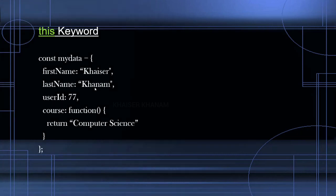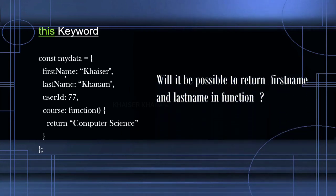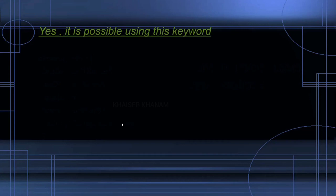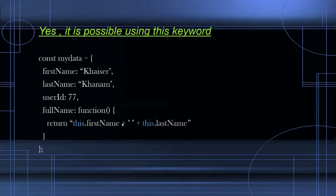Before that let's understand what is the 'this' keyword. Here I have my previous example. What if I just want to access first name and last name inside this function? First name and last name are inside this object, but I want to access those properties inside this function. Yes, this is definitely possible because of the 'this' keyword. So we are going to return this.firstName, concatenated with a space and this.lastName.